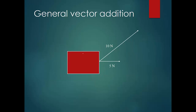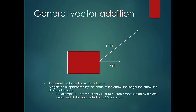But what if forces are not parallel? For example, a box pulled with 5 Newton in one direction and 10 Newton diagonally — the resultant is not simply 10 plus 5. You need to represent the forces in a scale diagram, where the length of the arrow represents magnitude. For example, 1 centimeter represents 2 Newton, so 10 Newton is drawn as 5 cm and 5 Newton as 2.5 cm.